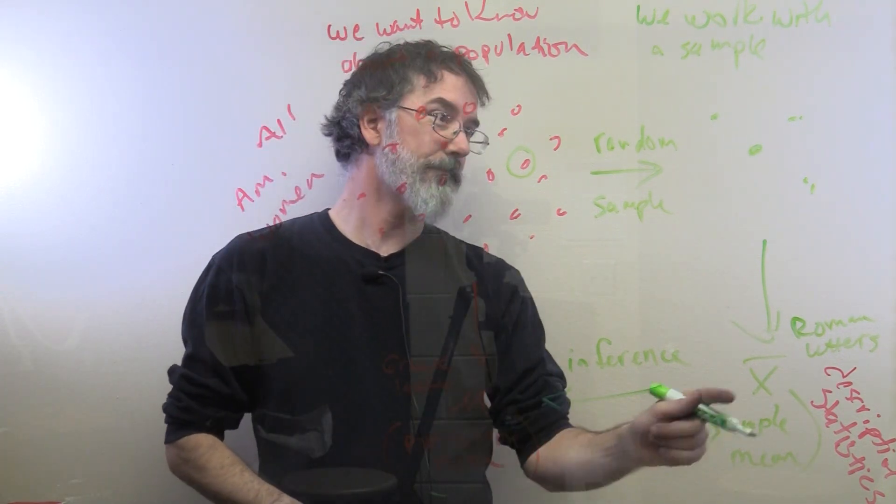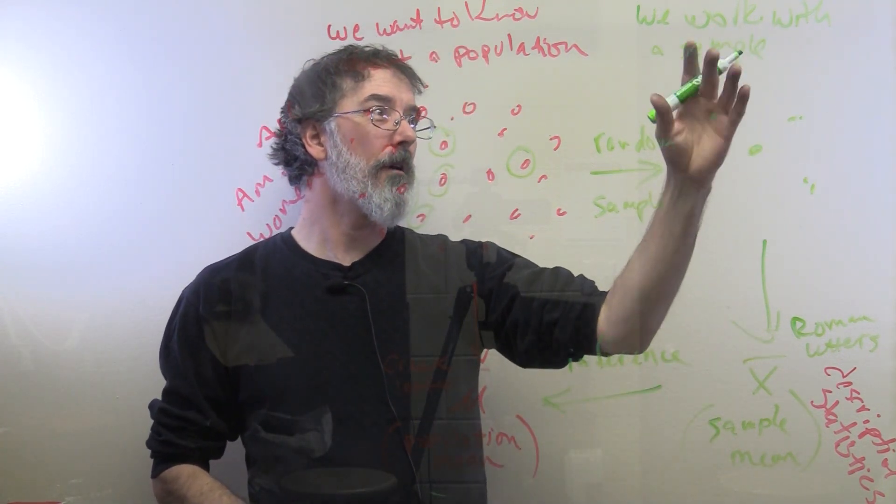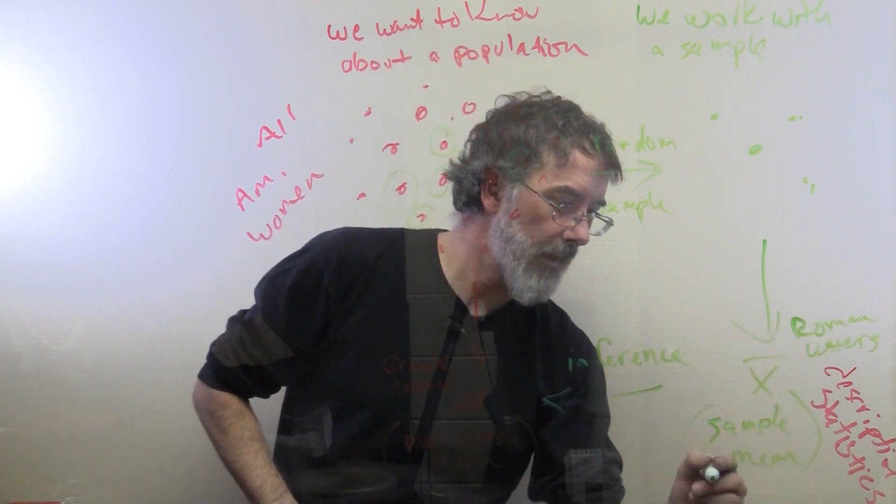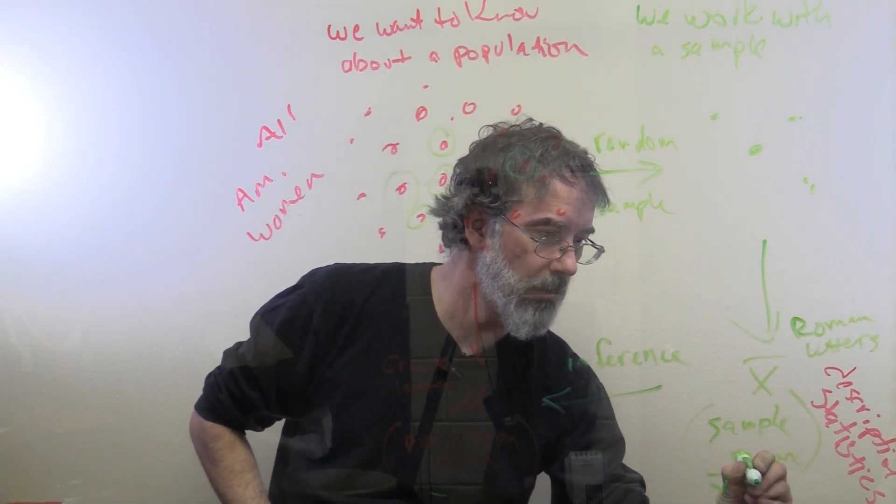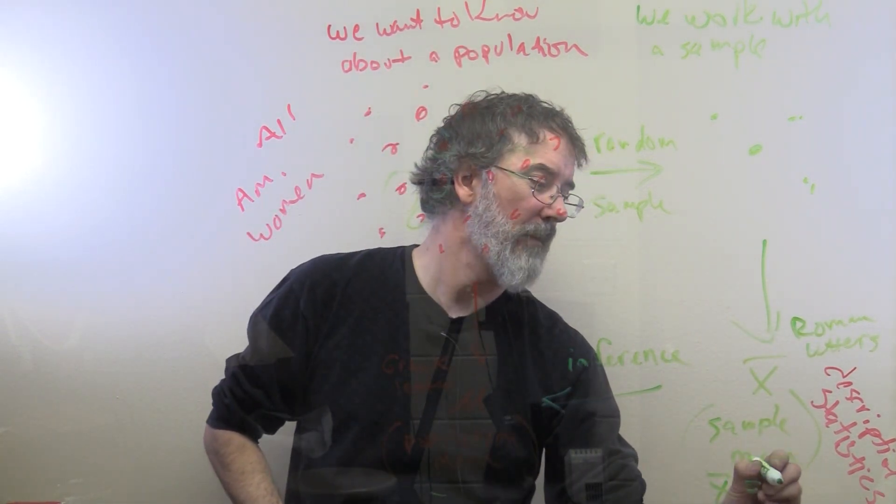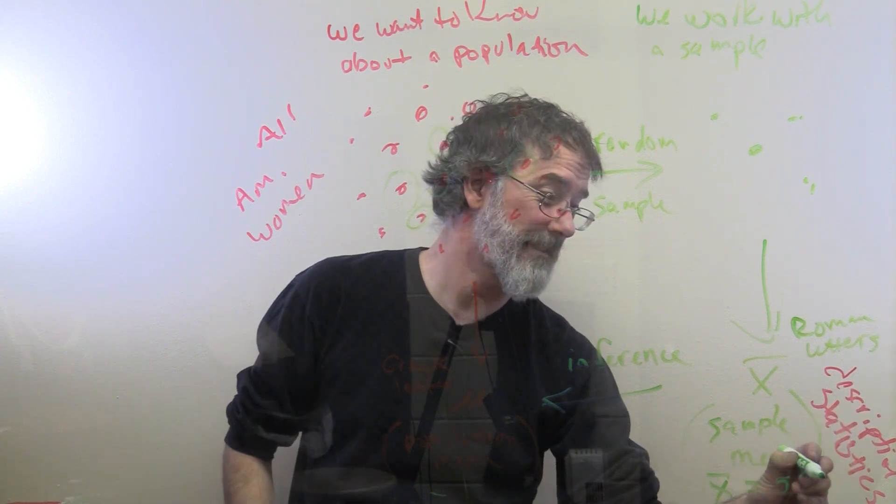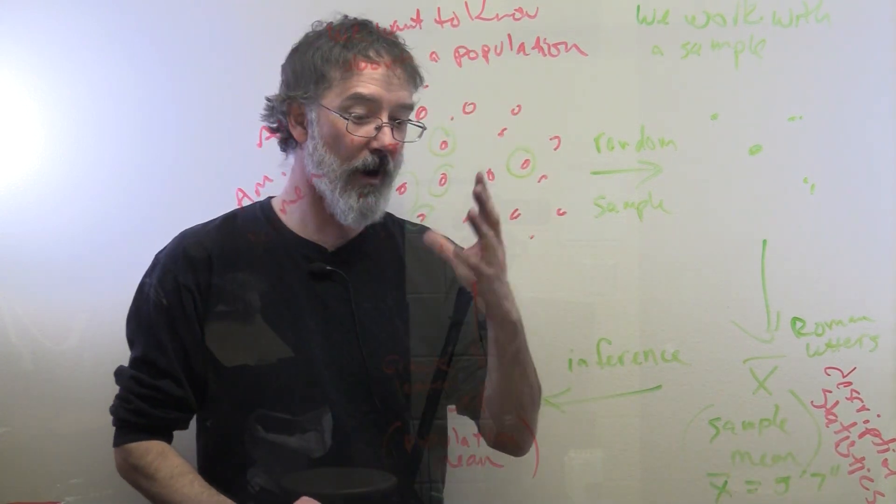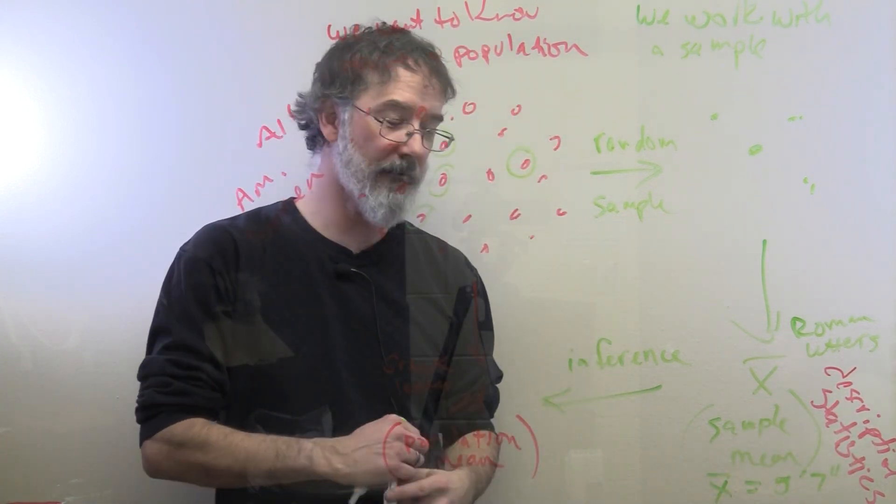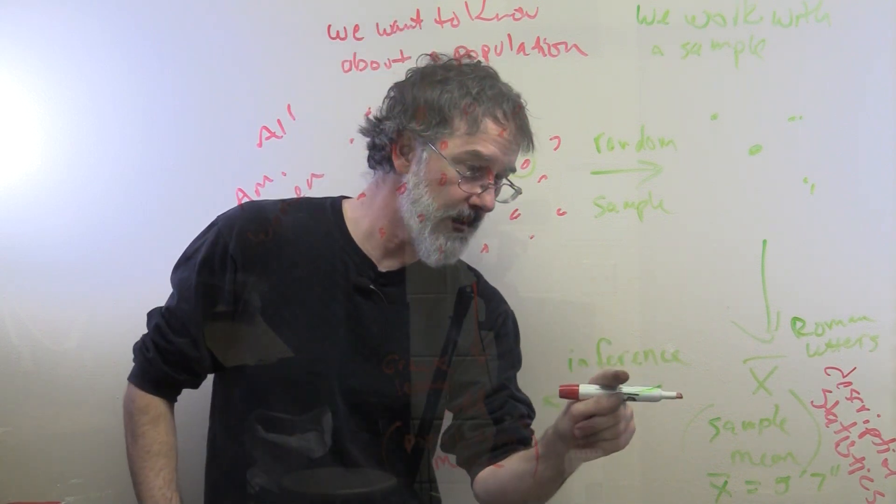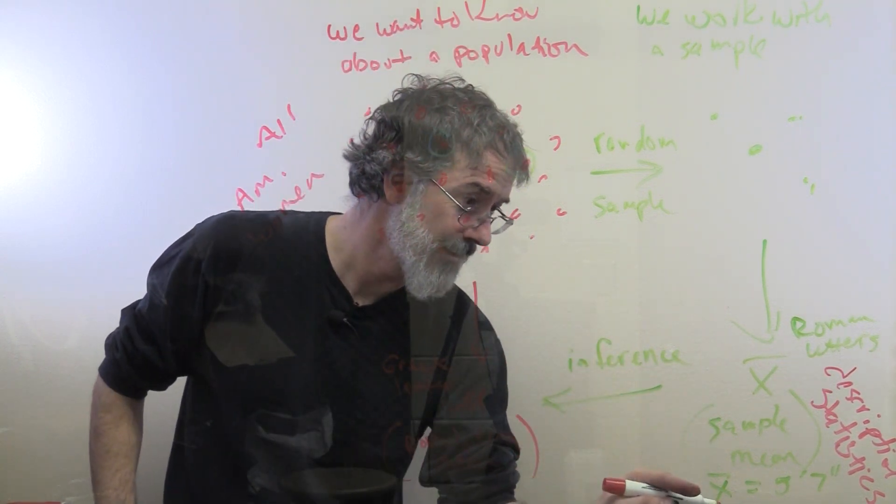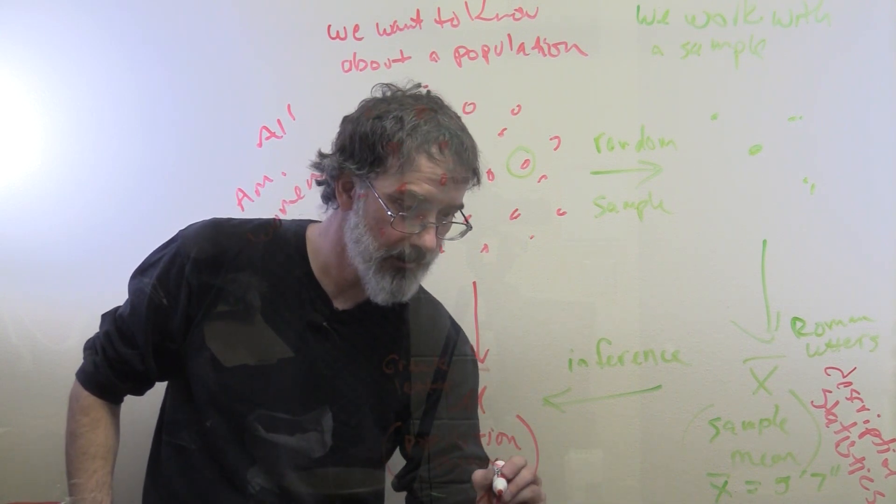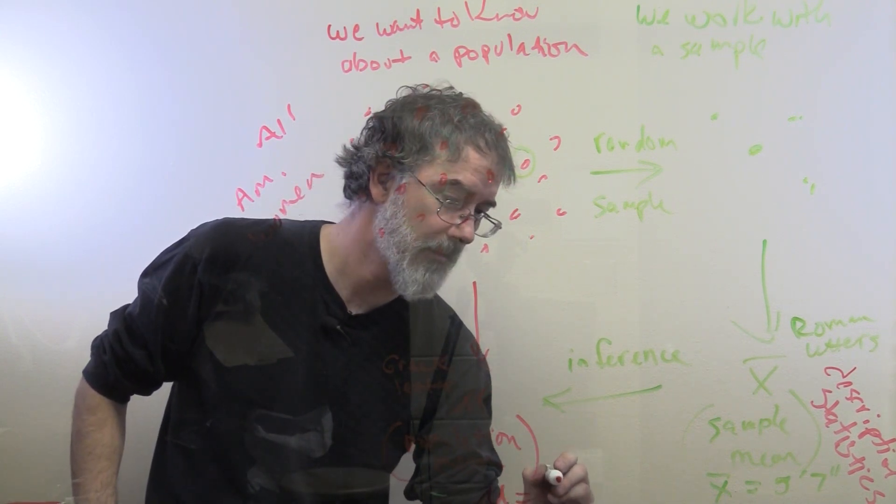So, for example, if you measure all of the heights of the women in our sample, and X bar, their sample mean is 5 feet 7 inches. And we want to know the population mean, the average height of all American women, and we do not know it. But the inferential process here is to just take the sample mean and use that as your guess at the population mean.